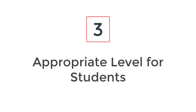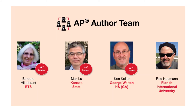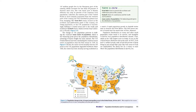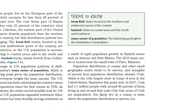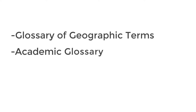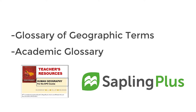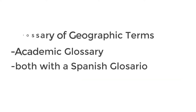Number 3: Appropriate level for students. The authors' friendly and approachable tone engages under and upperclassmen without sacrificing rigor. Highlighted and defined key terms with relevant examples help students rise to the rigor of this course. In addition to the glossary of geographic terms, an academic glossary is included in the teacher resources and in our digital platform, Sapling Plus. Both glossaries will appear with a Spanish glosario.